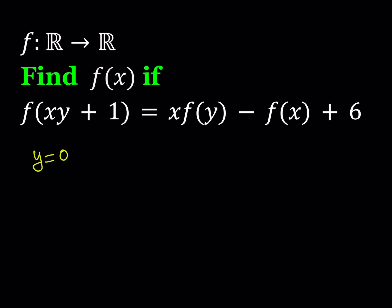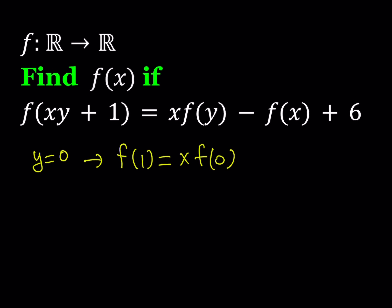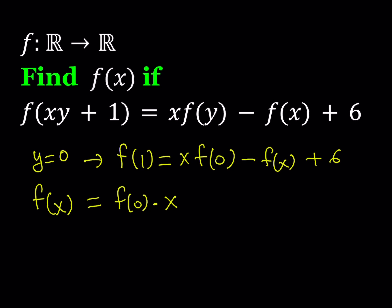Substituting y equals 0 is nice because it allows us to deal with x and y at the same time. If you substitute y equals 0, you get f of 1 equals x times f of 0 minus f of x plus 6. From here, we can isolate f of x, putting it on the left-hand side, giving us f of 0 times x plus 6 minus f of 1.